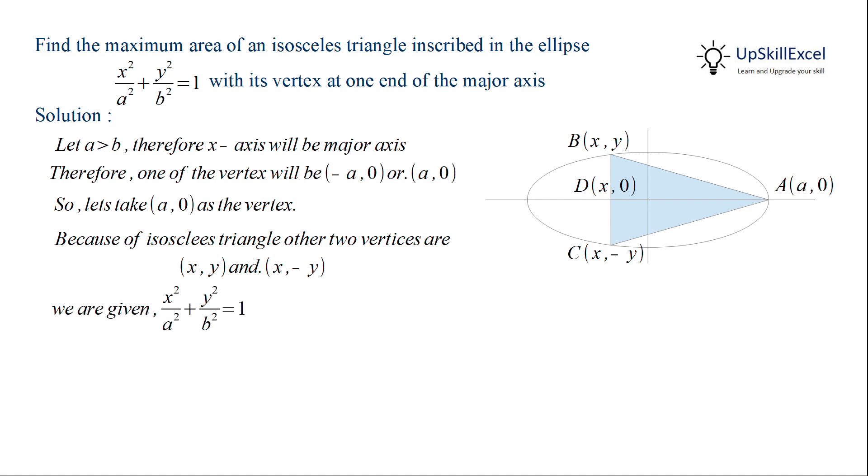Now let's observe the equation of the ellipse. From this by rearranging we'll find out y in terms of x. So we take x²/a² to the right hand side then multiply both sides with b² and then after taking square root we get y = ±(b/a)√(a² - x²) where the positive y corresponds to vertex B and negative value corresponds to vertex C.